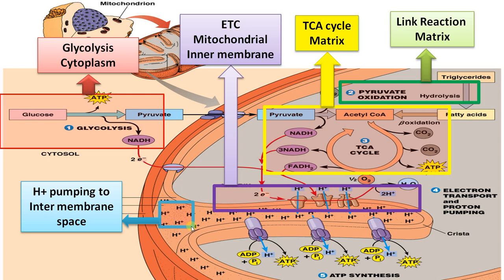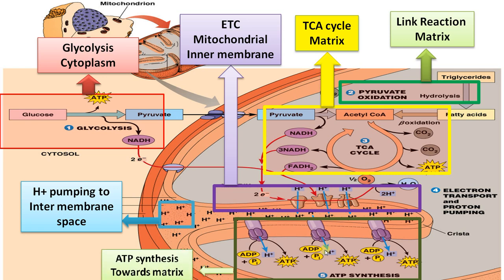This creates a proton gradient: the number of protons in the intermembrane space increases. To reach equilibrium, protons must move out, and the only way out is through ATP synthase. As the protons move through ATP synthase, that energy is used to phosphorylate ADP to ATP. So proton-driven ATP synthesis occurs in the inner mitochondrial membrane.